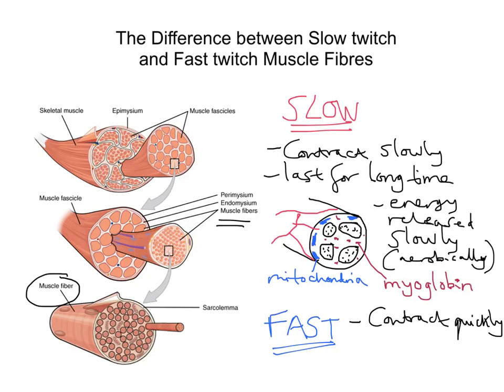Whereas slow twitch fibres last for a long time, fast twitch fibres last only a short time. They're ideal for things like sprinting, but you also find fast twitch muscle fibres in muscles used for fast movement — not just the legs and arms in a sprint, but also the eyes. Eye movement is very, very quick, so we actually have fast twitch fibres in the muscles that control eye movement.